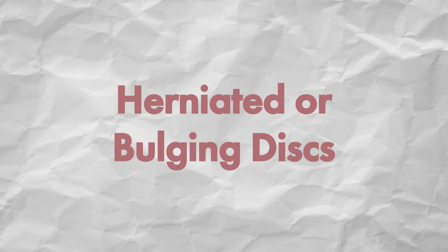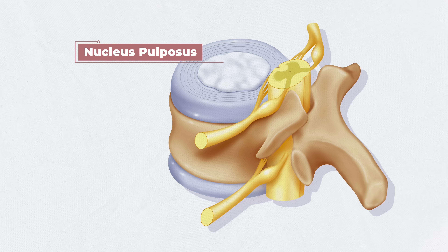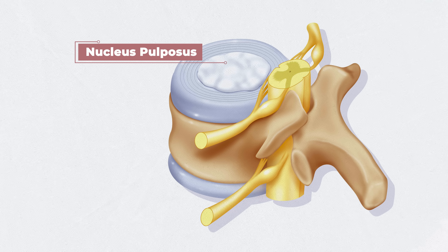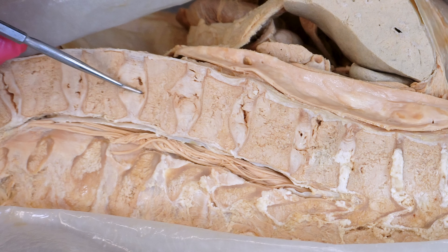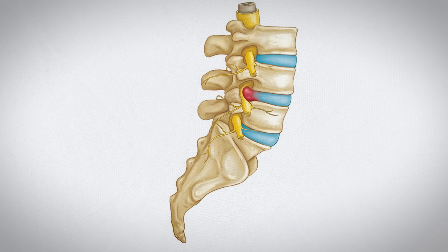Let's move on to herniated or bulging discs, which cause about 20–30% of back pain cases. The discs are found between the vertebral bones, as you can again see on this cadaver dissection. The center of the disc is made up of a gel-like shock-absorbing material called the nucleus pulposus. Surrounding it is the outer fibrous ring of fibrous cartilage called the annulus fibrosus, which keeps the nucleus contained. The outer annulus can weaken from age, wear and tear, or trauma, and when damaged, the inner nucleus pulposus can push out, resulting in a bulging or herniated disc.